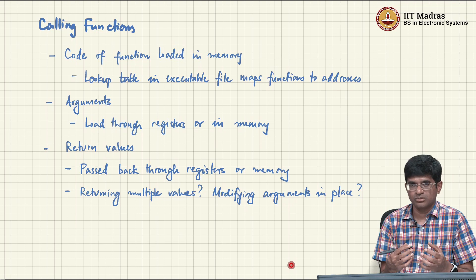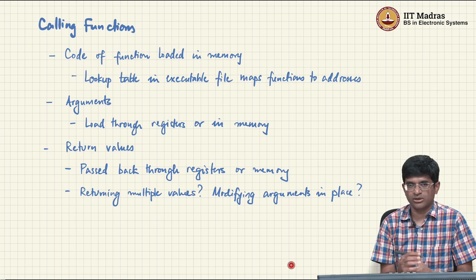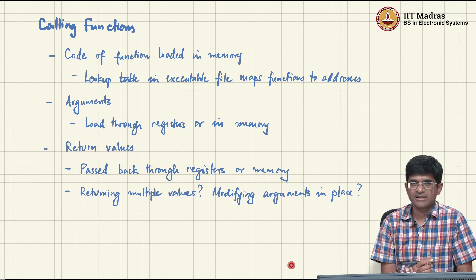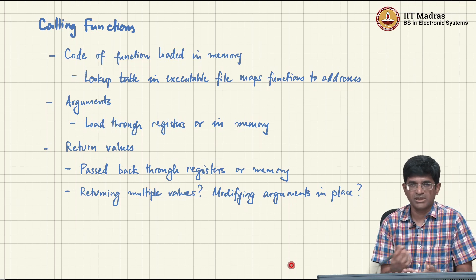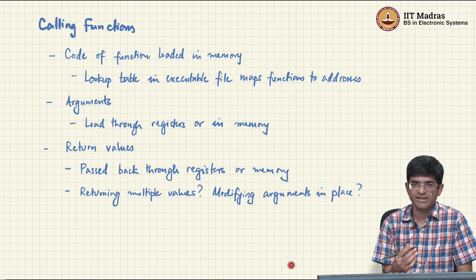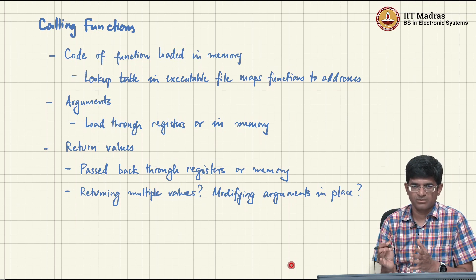If you are linking code against something compiled with a different compiler, conventions matter. Most compilers agree on what is called a binary interface, which specifies where arguments are placed and how values are returned, so that all compilers can interface with each other neatly. For now, what is important is that you could either put an argument into a register or put it in some place in memory and tell the called function which part of memory belongs to it, where its arguments are, and what it can use for computation.